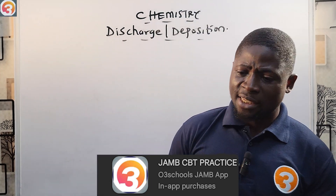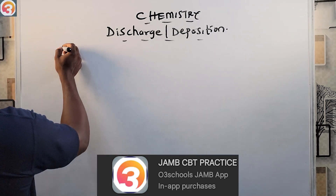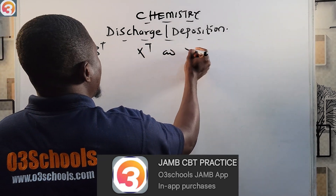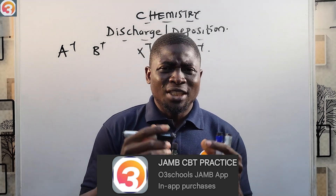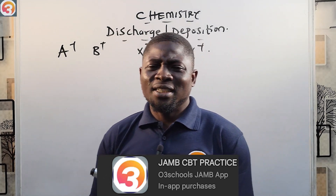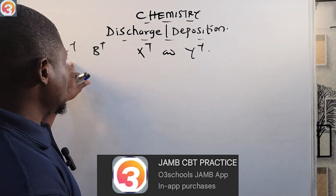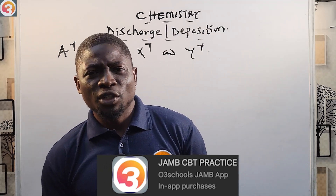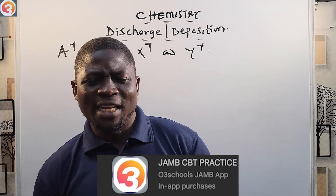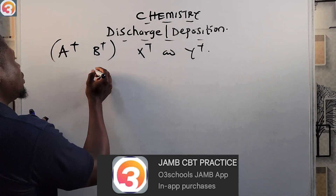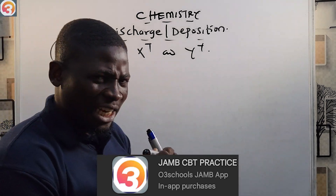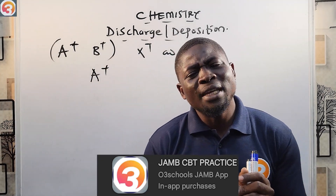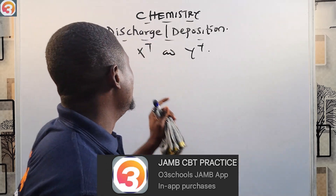I will explain using an example. Let's say we have two cations, A-plus and B-plus, in competition for discharge at the cathode during electrolysis. If I told you that A-plus was discharged, it would be wrong to say that B-plus was deposited.